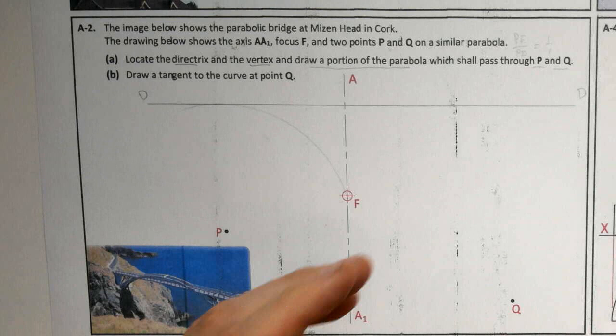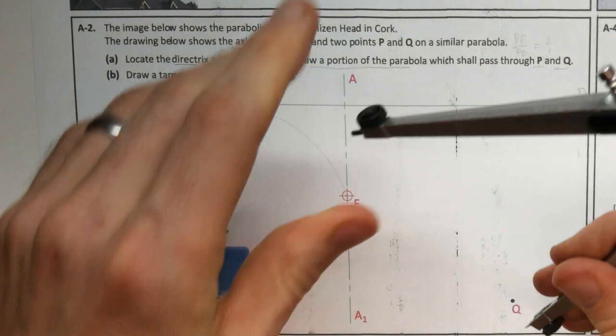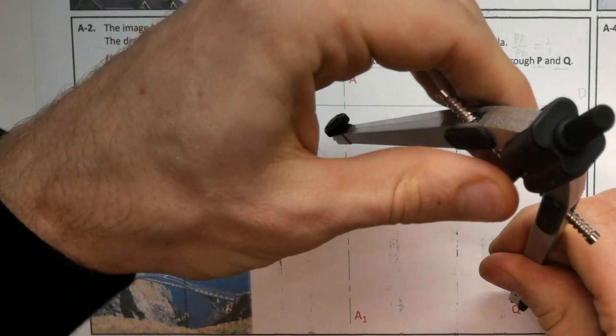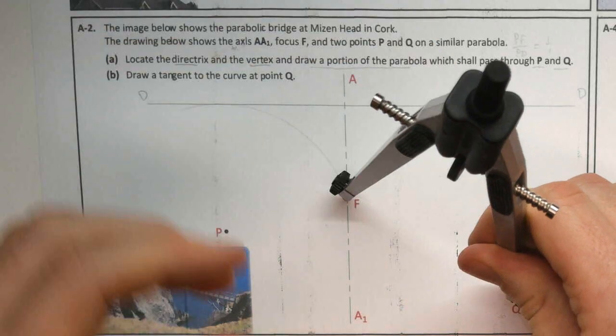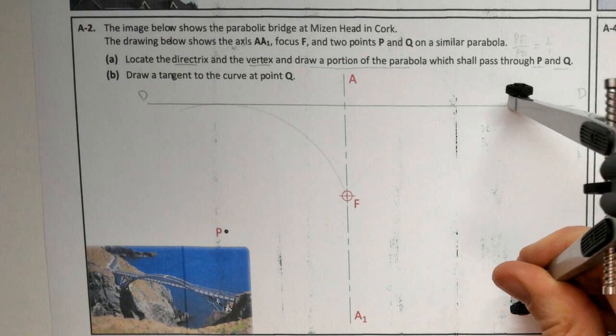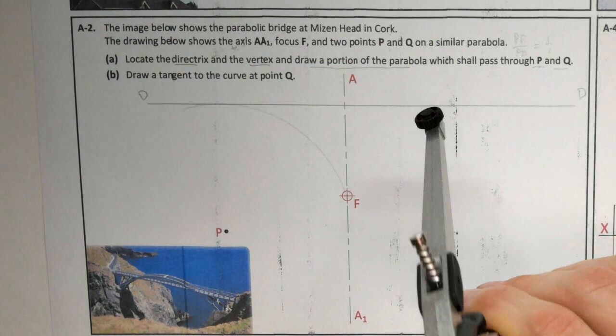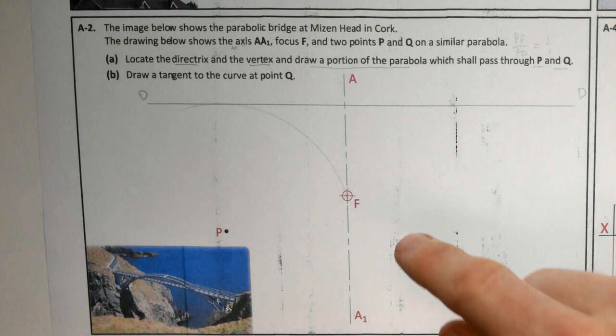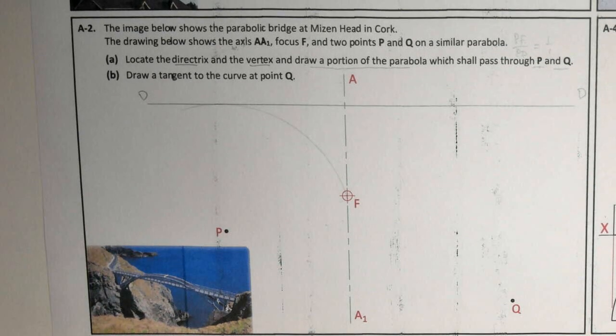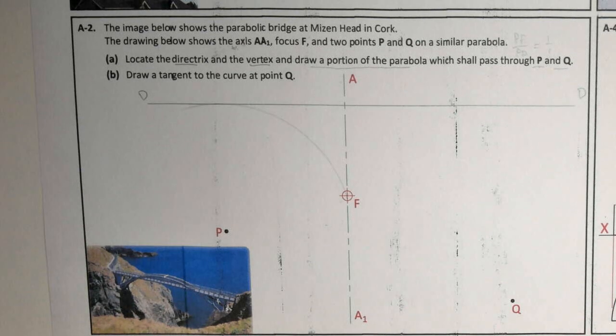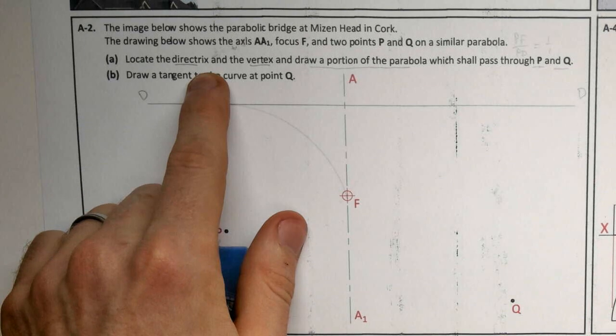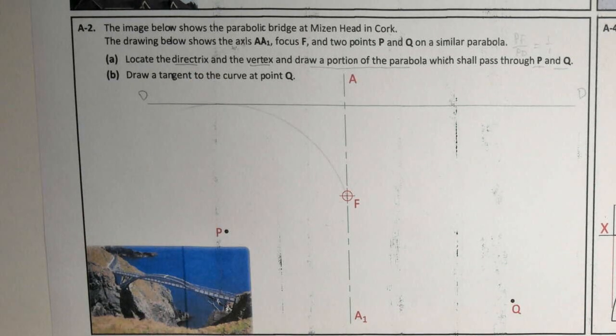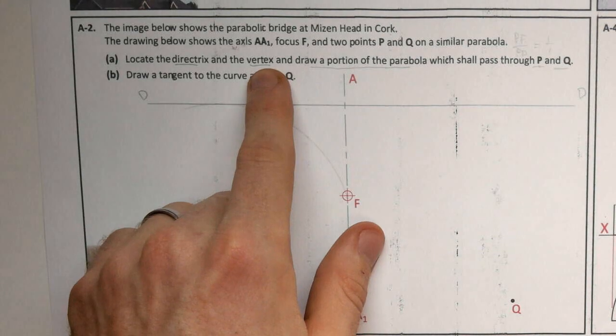You could also, if you wanted, get the distance from Q to F and swing it out and it will touch the directrix perfectly as well. That's if they hadn't given you the axis. And now we've got our directrix found, we want to find our vertex.